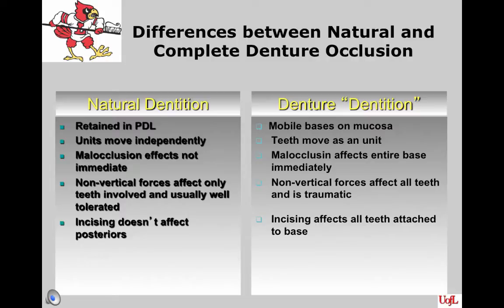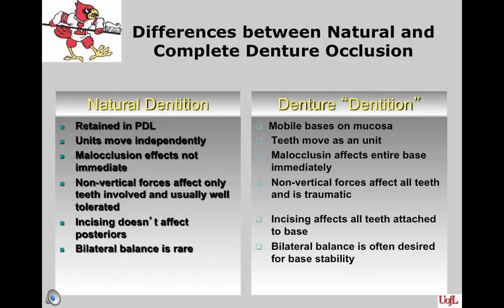With natural dentition, you rarely have bilateral balance — meaning that all of the teeth contact in all of the excursive motions — whereas in denture dentition, it is often desired for base stability for there to be contact in all the eccentric movements on the denture teeth. Tactile sensitivity is also much greater with natural dentition than with denture dentition.